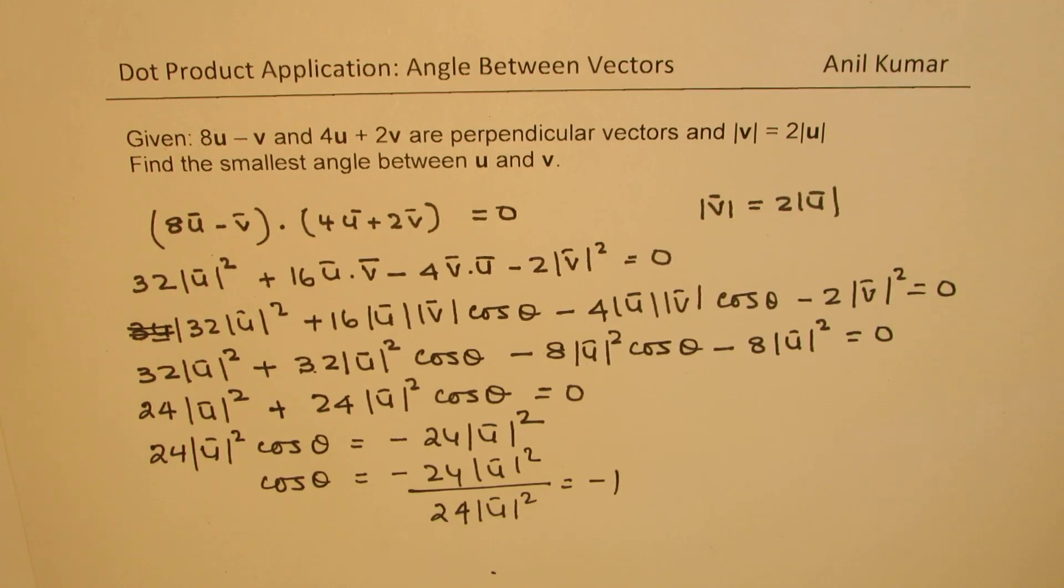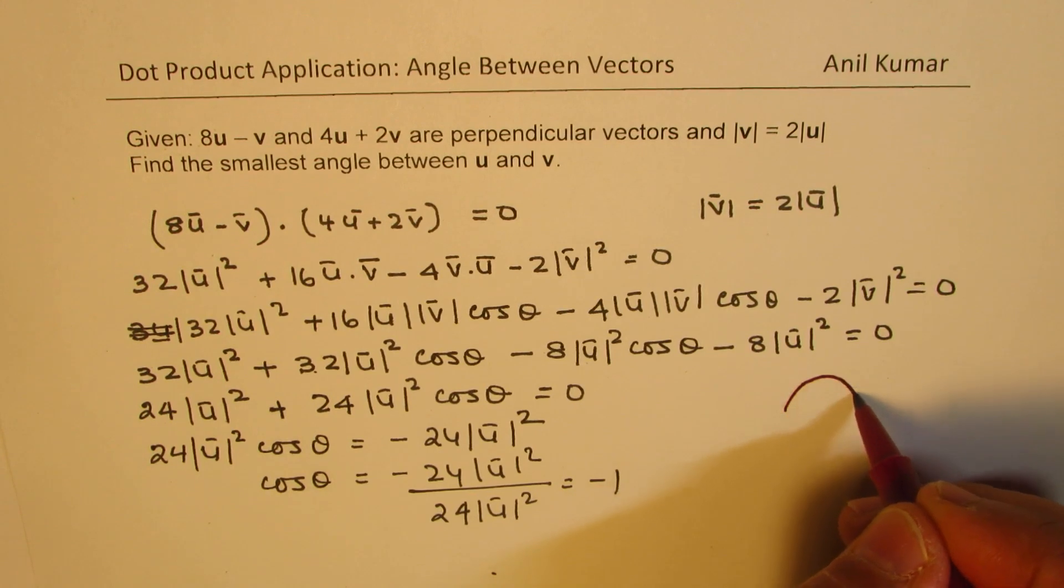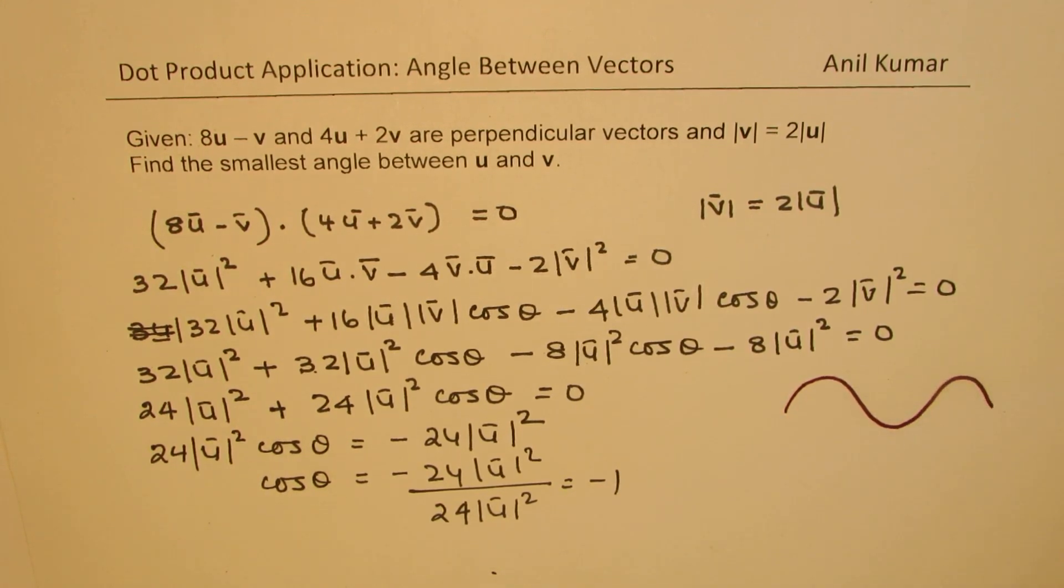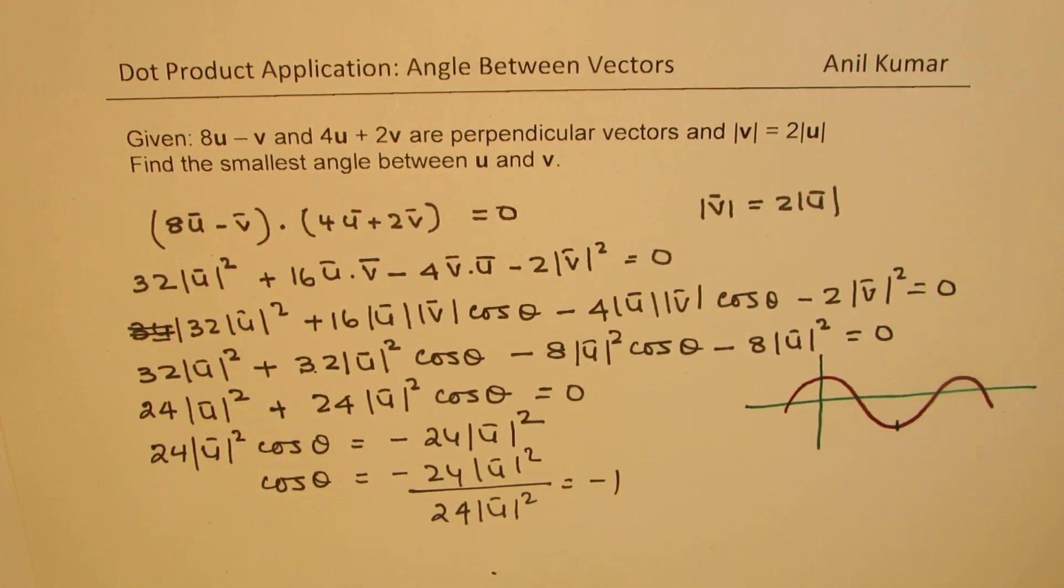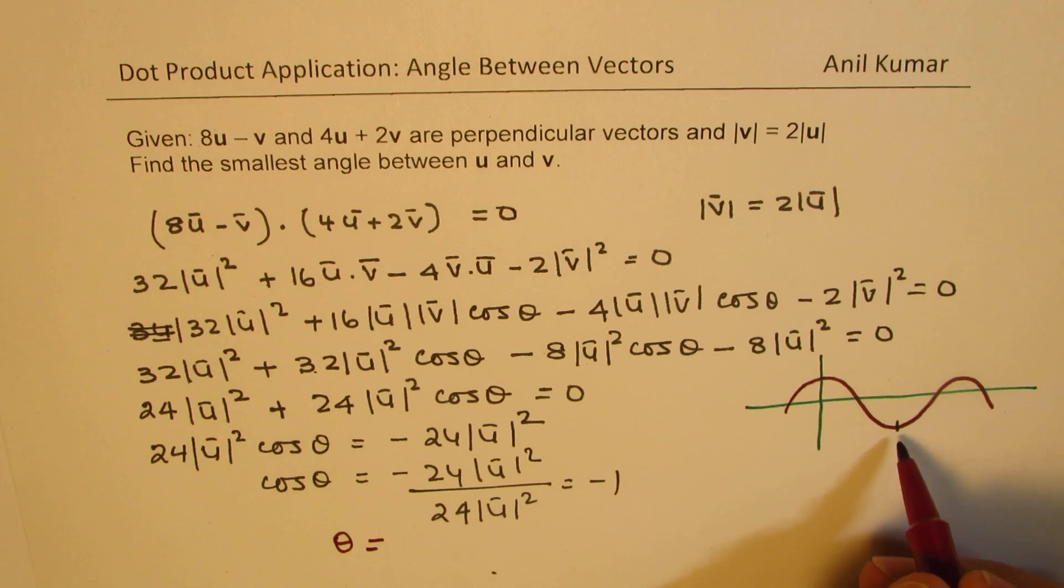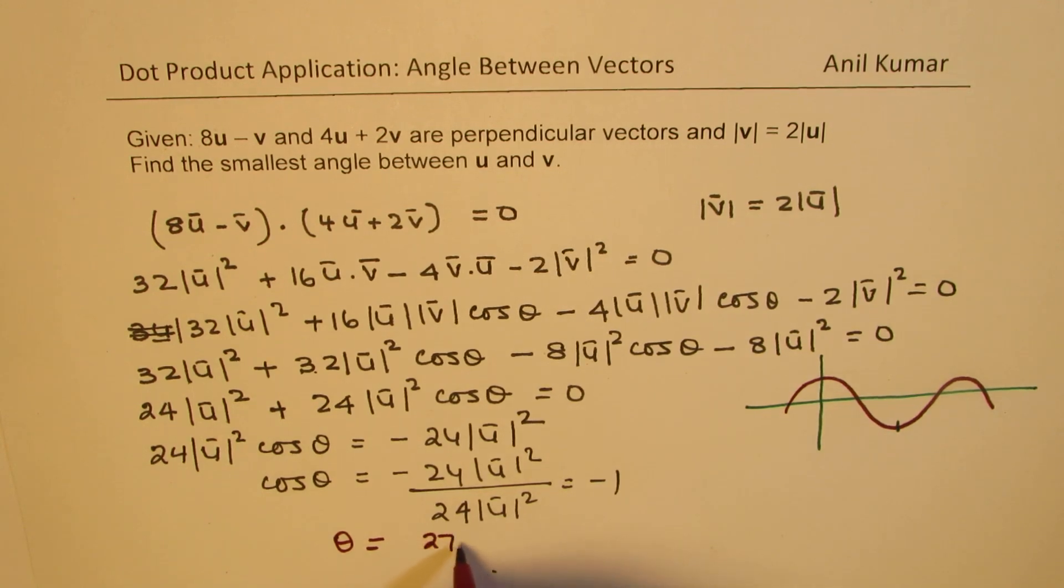And what is the angle which gives you negative 1 for cosine? In a cosine wave, it starts with 1, and that is minus 1 for, if you want to write in degrees, 270 degrees or 3 pi by 2. So that gives you the angle theta equal to 270 degrees or 3 pi by 2.